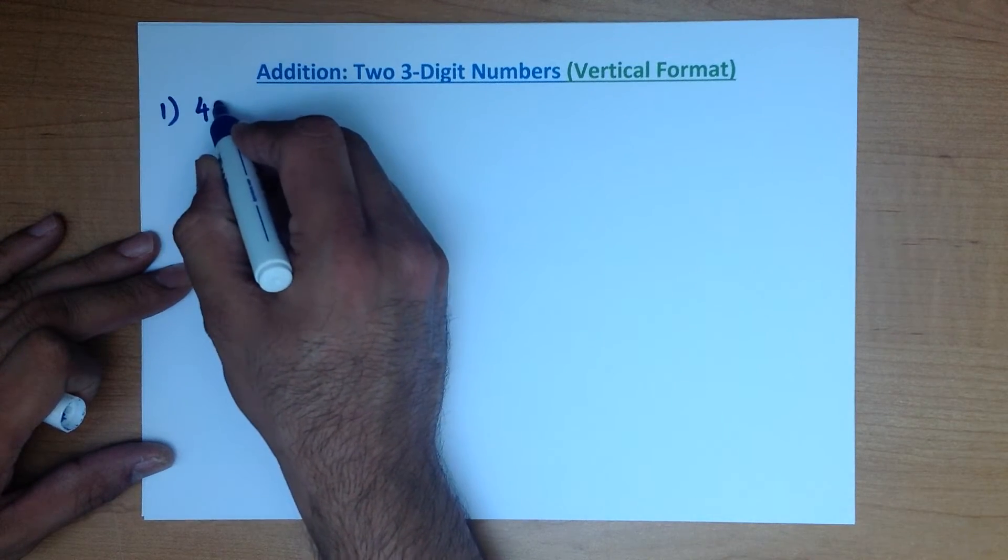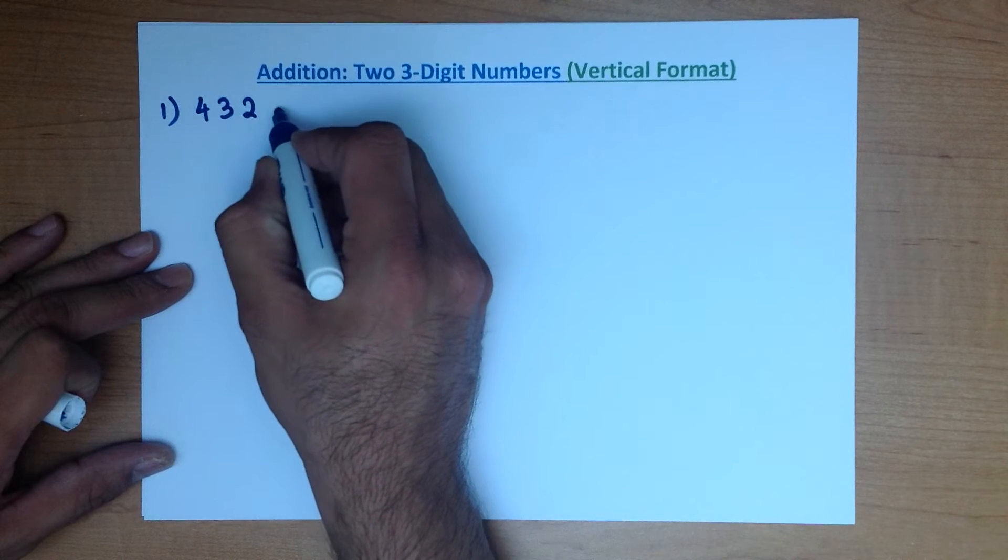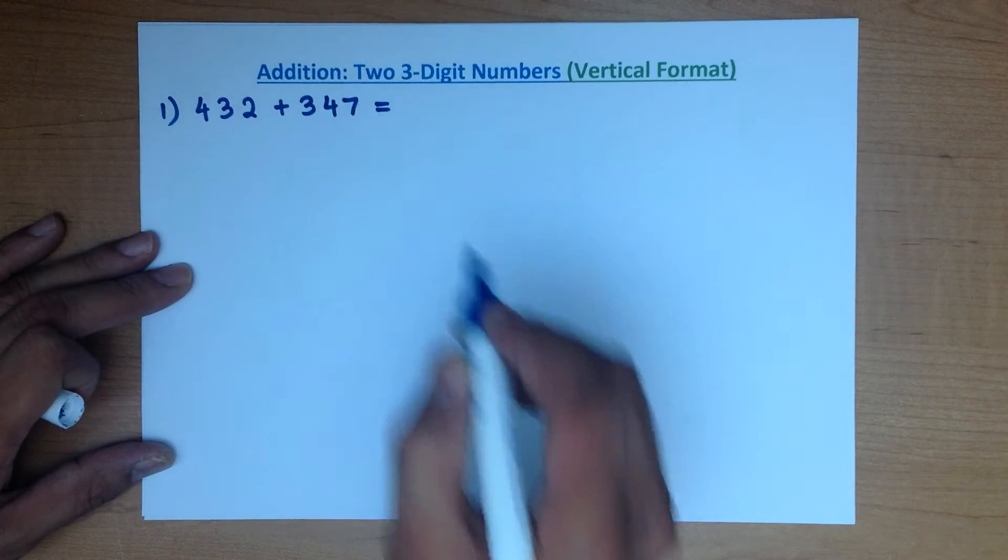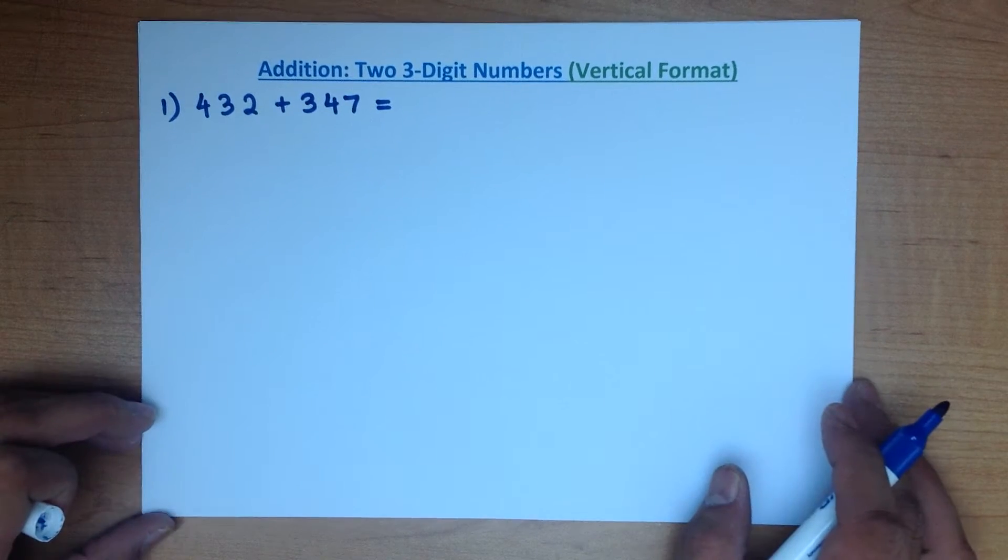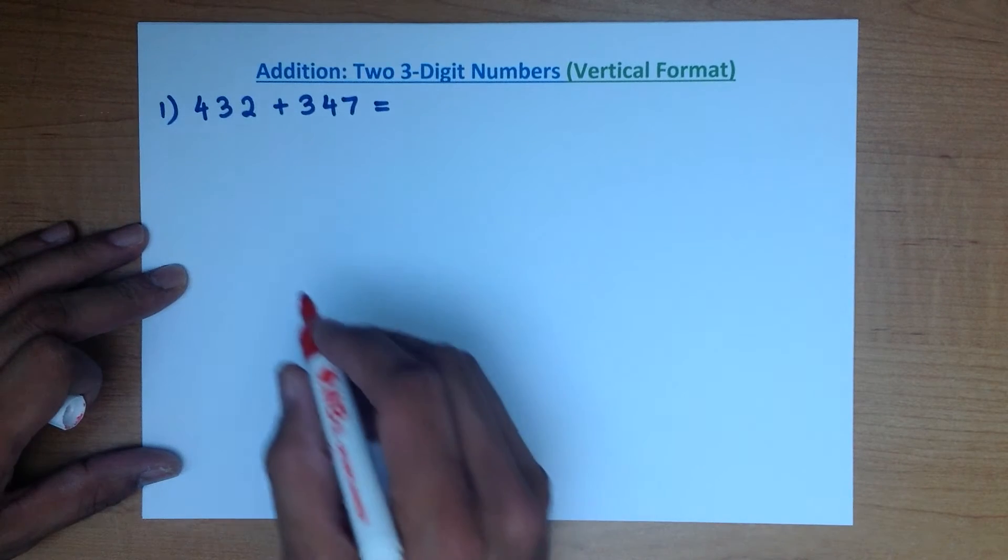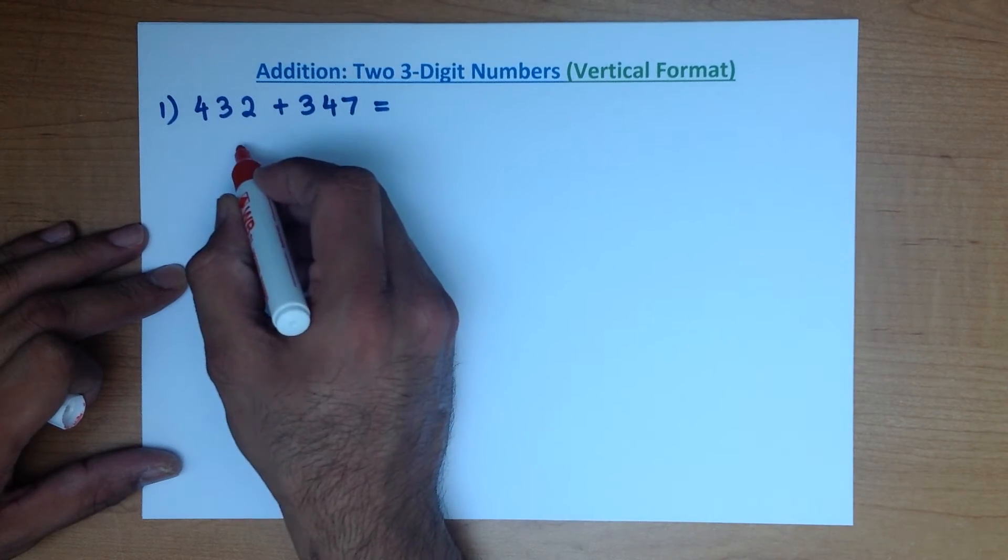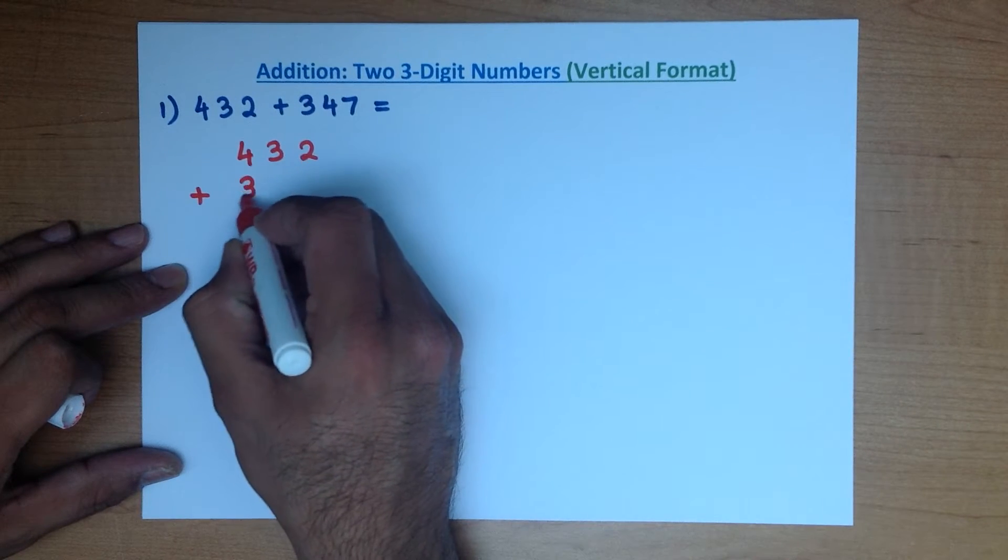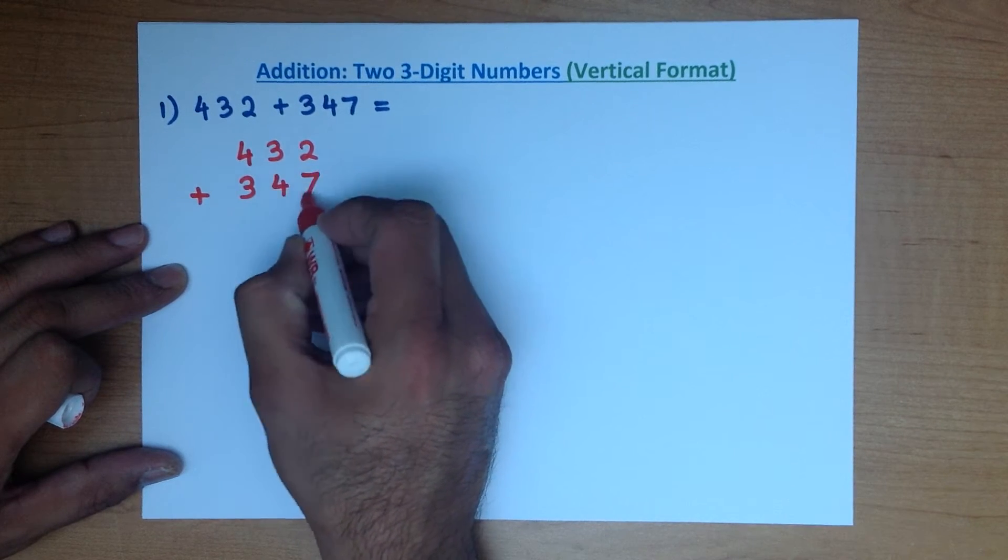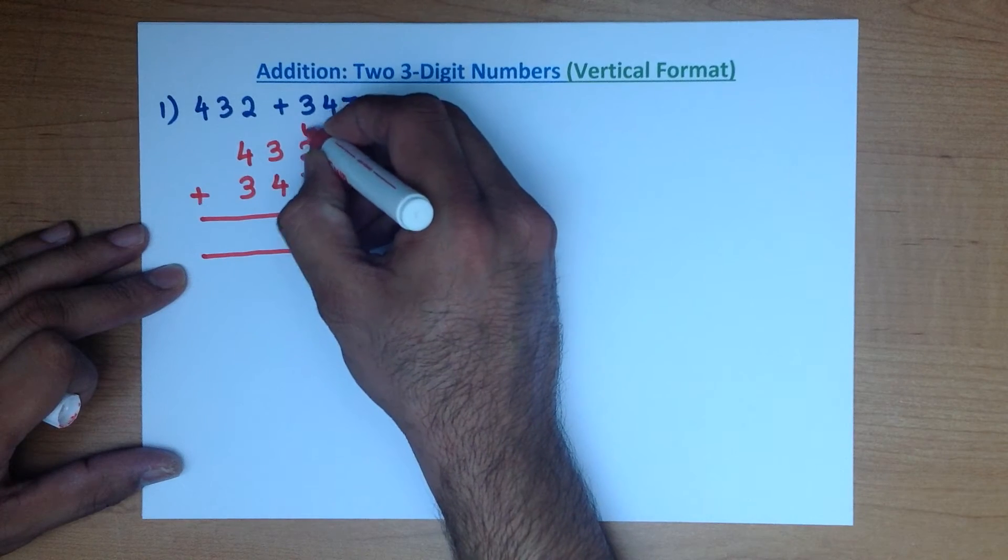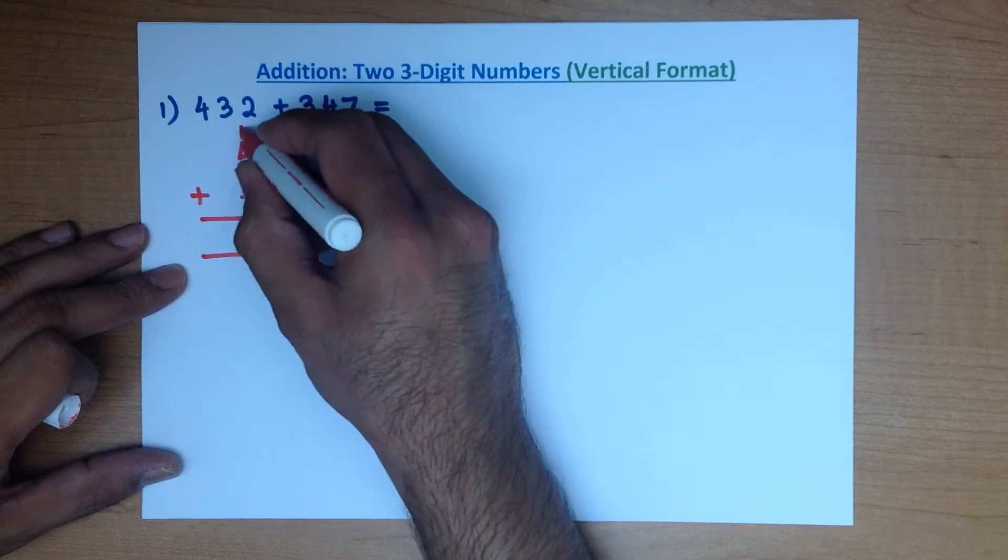What is 432 plus 347? 432 plus 347. The first thing to do is write them down in the vertical format in columns. 432 plus 347. We will label the columns: units, tens, hundreds.